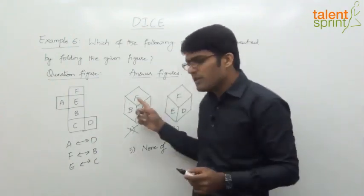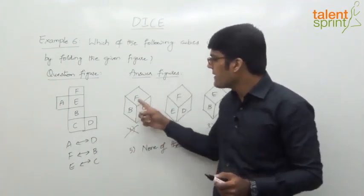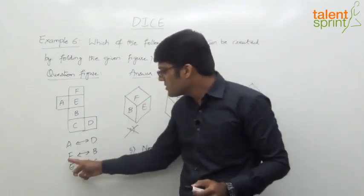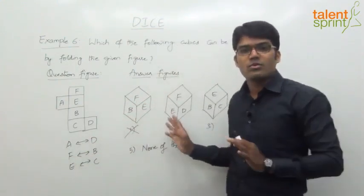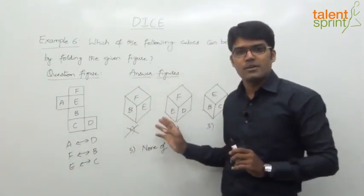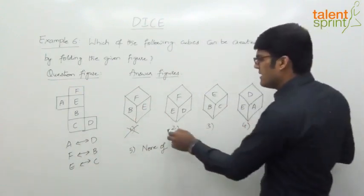Checking the third option: look at F — what is opposite to F? B. But B is given here. So rule that out. Therefore, the second option is the correct answer.